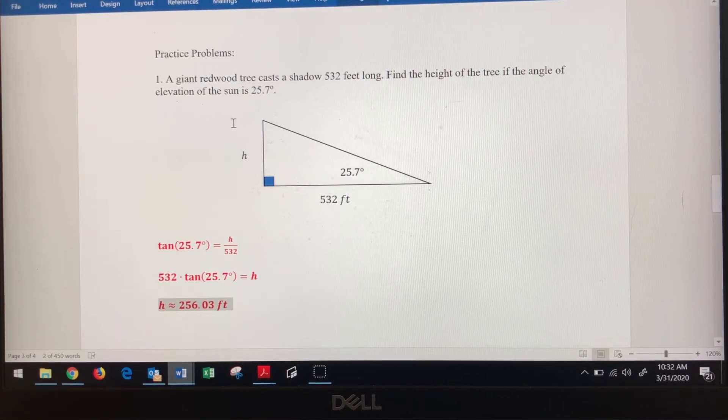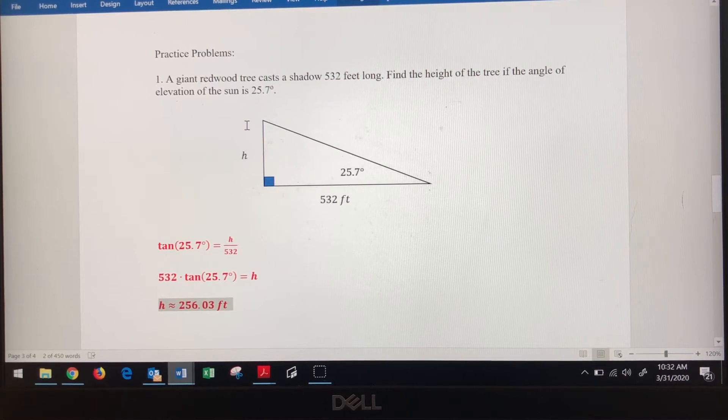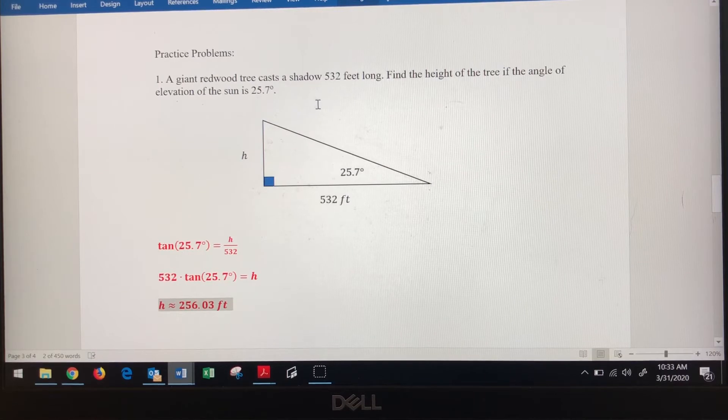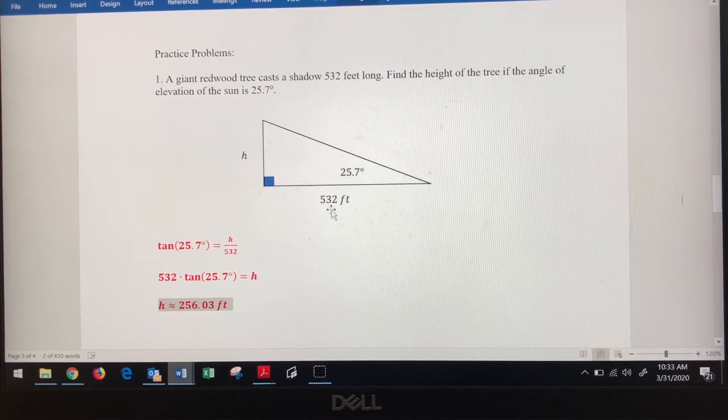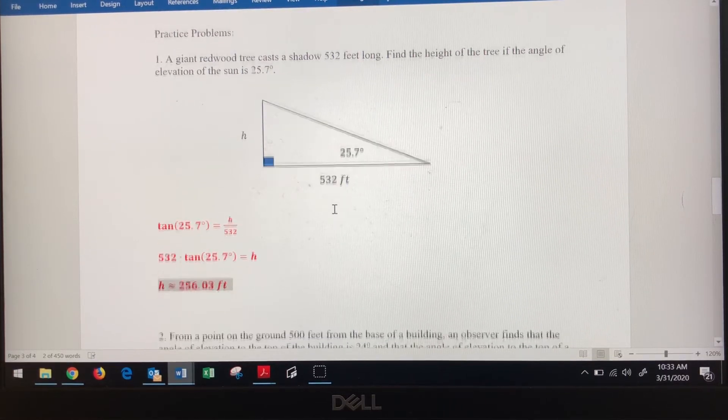The hardest part for you guys is gonna be setting up your triangle. As you read the word problem, you're gonna draw your right triangle and make sure you place all the known information where it goes. If you make a mistake, it will be because, most likely, you've put the given information in the wrong location, so be very careful with that.